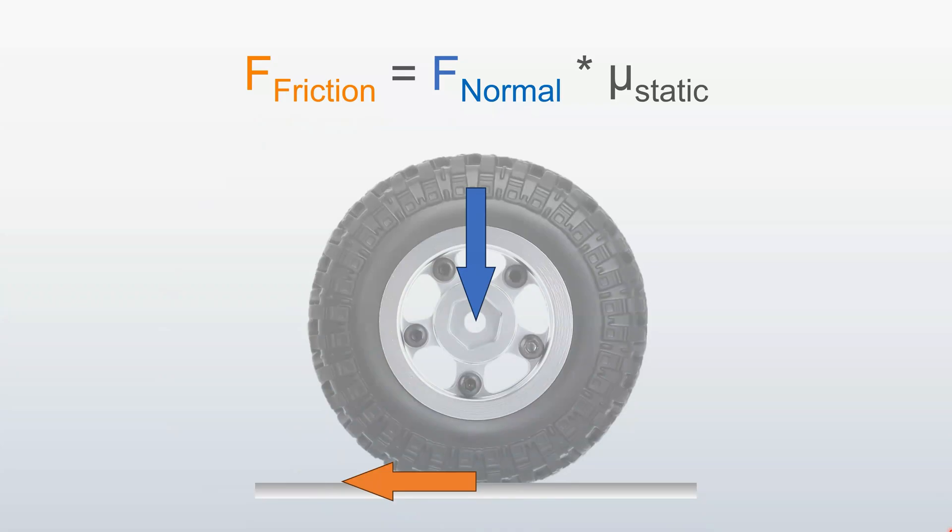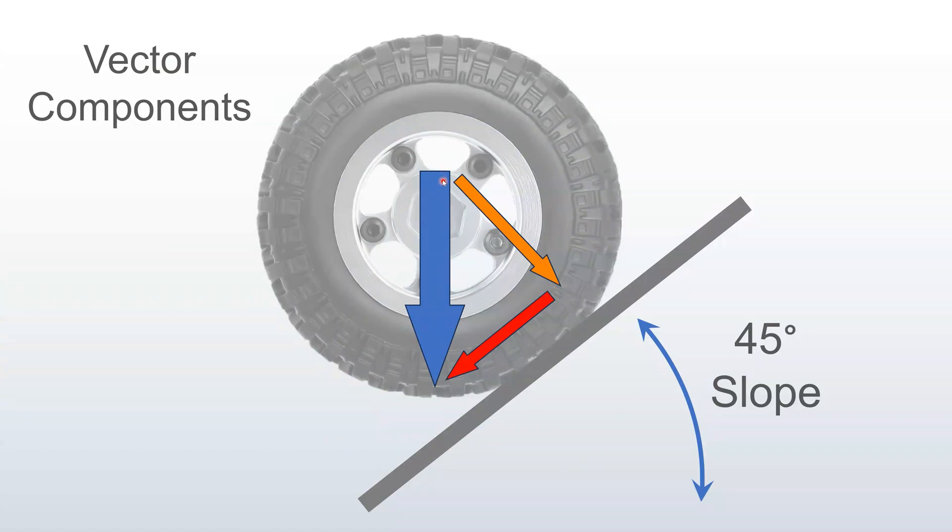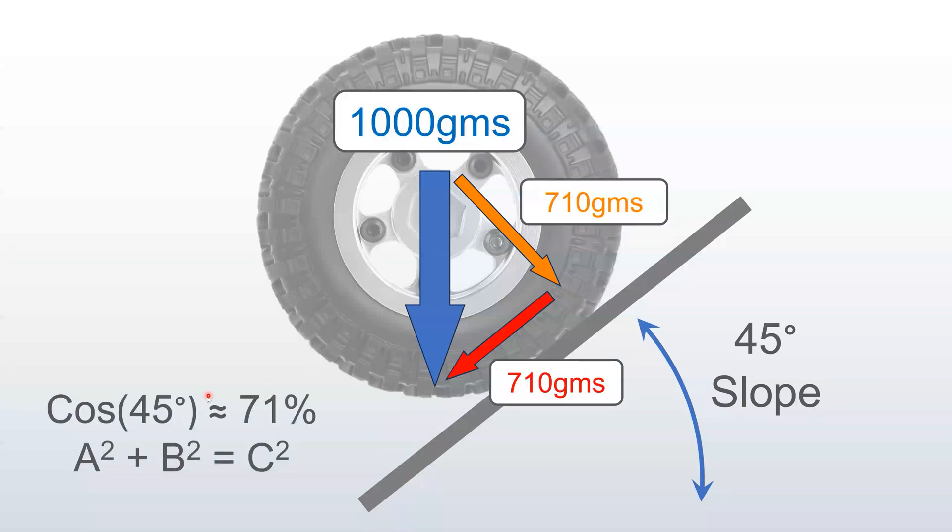Now, because this normal force or this downforce is coming from gravity, it only acts vertically. When the terrain starts to be sloped, then you have to break down what's called the vector components. Your normal force now is the force perpendicular to the angle of the slope. So you lose some of your downforce. The normal force is never as high as your downforce on an angle. The equation for your normal force, this orange force, is pretty basic trigonometry. Cosine of the angle or a squared versus b squared equals c squared also works. Basically, if you have a thousand grams of downforce, you're only getting about 71% of that force pushing into the slope, adding to your traction or frictional force.